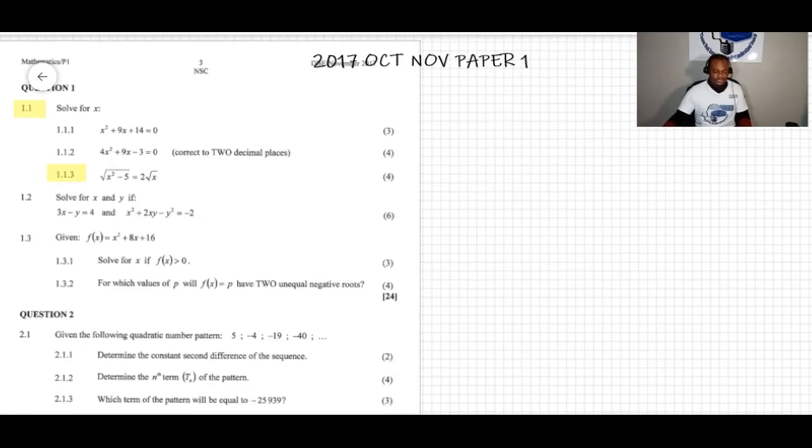The question says: square root of x squared minus 5 equals 2 root x. We need to find the value of x.